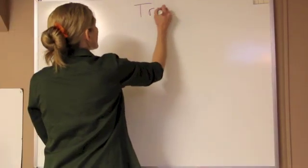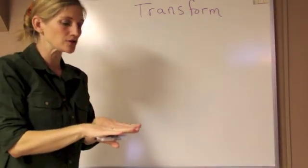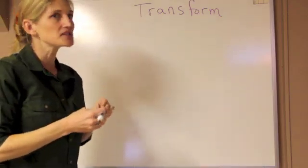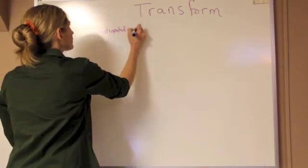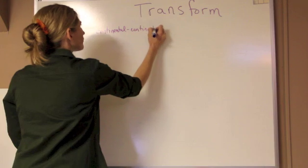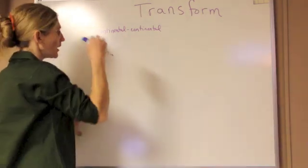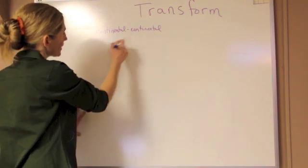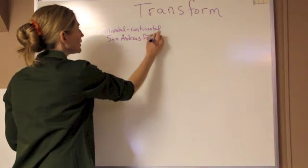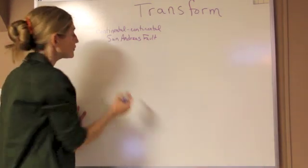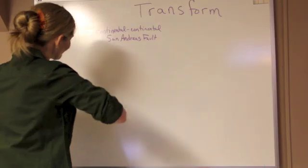The last type of plate boundary is the transform plate boundary, where two plates are sliding past each other horizontally. The most common example we see is continental-continental. Rather than a sideways cross-section, we're going to look at this from the top — looking down onto the map. The example we have is the San Andreas fault area, and we'll go down to Southern California and draw the boundary, showing Baja California and Central Mexico.